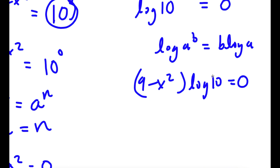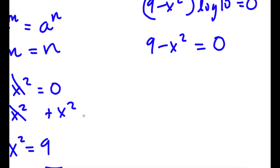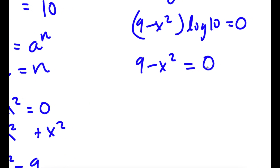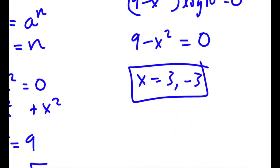Log 10 is simply 1. So I have 9 minus x squared times 1, which is simply 9 minus x squared is equal to 0. And again, I'm back to where I started: 9 minus x squared equals 0, so x is equal to 3 or negative 3. That is my second solution method.